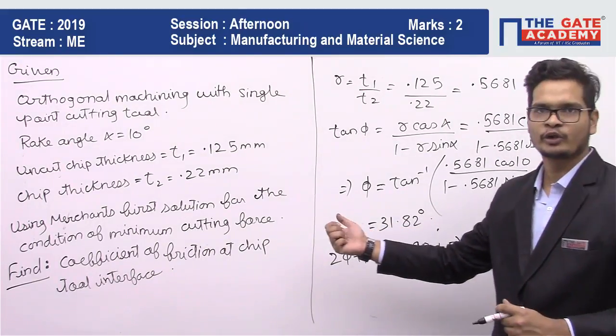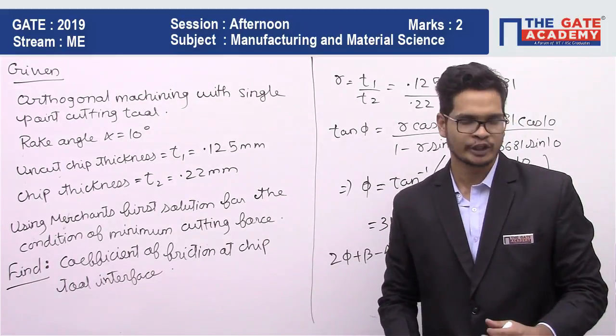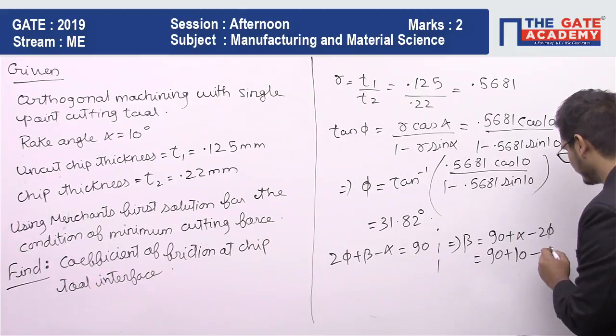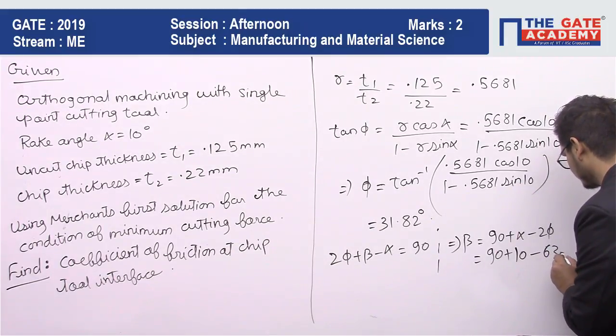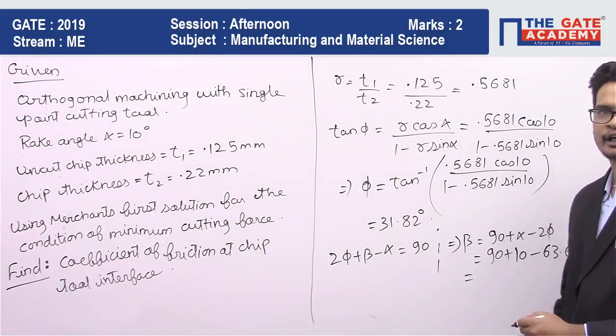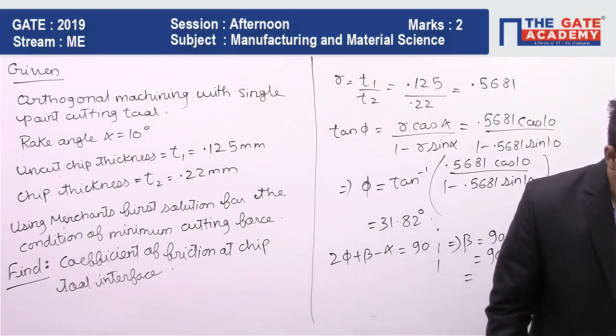Phi is 31.82. So 2 times 31.82, we get the value of 63.65. So the value of beta comes out to be 36.34.